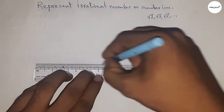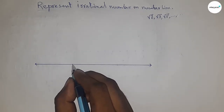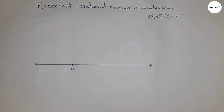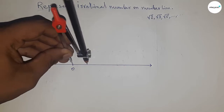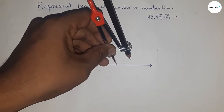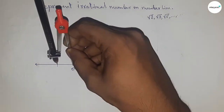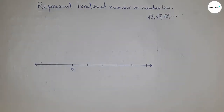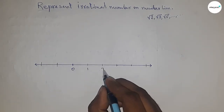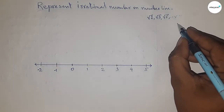Now representing irrational numbers on the number line. First, draw a line of any length and mark the ends with arrows, taking zero as the starting number. Mark numbers on the line using unit length — that means one unit length. So we have one, two, three, four, five and so on on the right side, and minus one, minus two and so on on the left side.